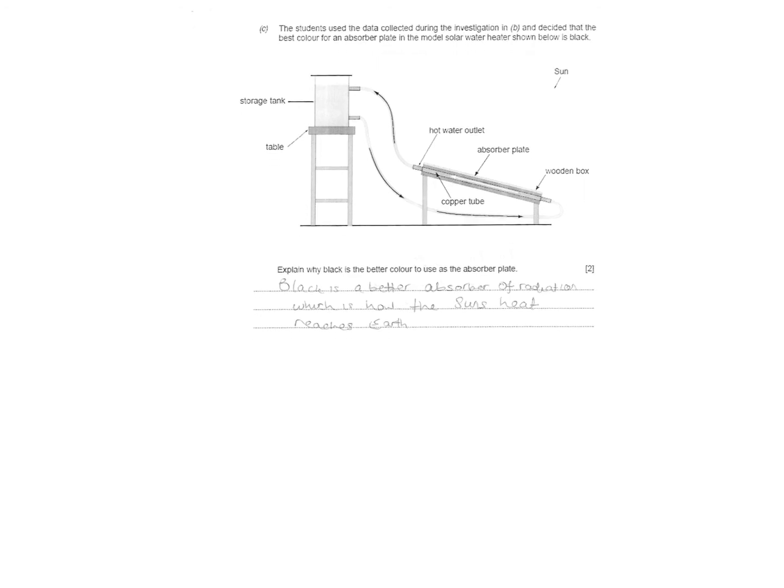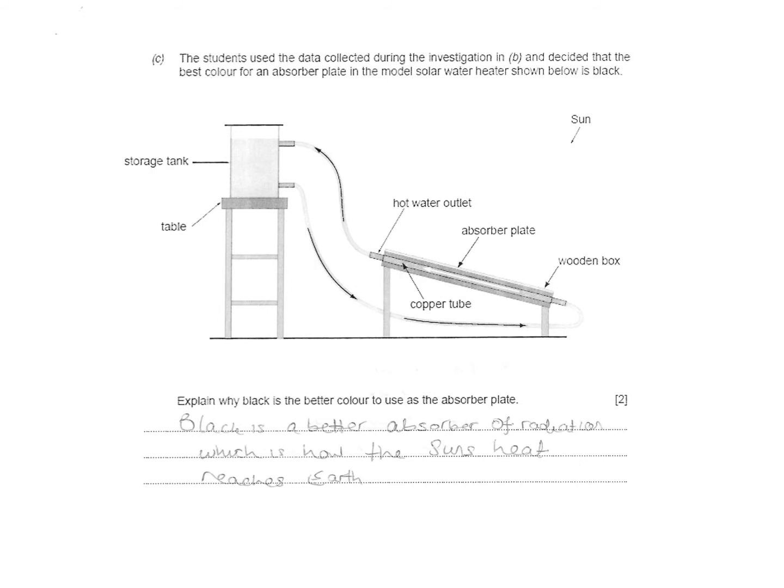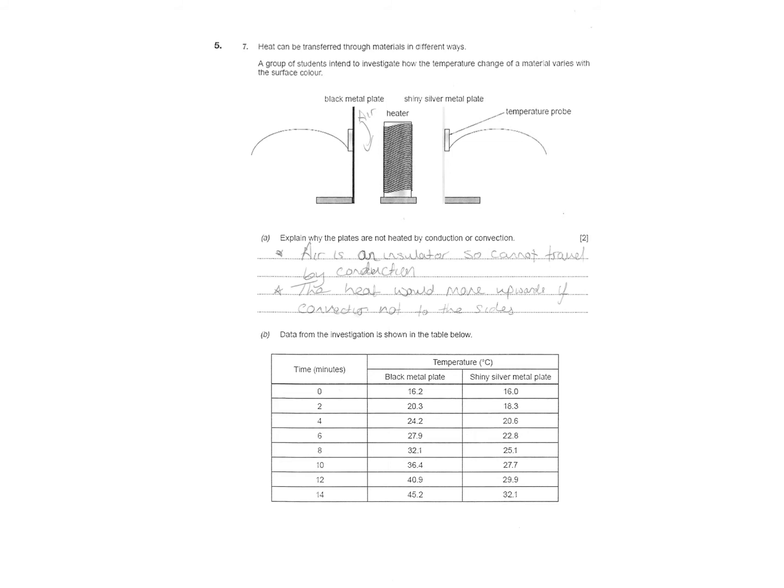The students used data collected during the investigation and decided the best colour for the solar water heater shown below is black. Explain why black is better. Black is an absorber of heat, so it will show how much sun's heat reaches the earth. You can see the same kind of question comes up as before. As soon as you see black and silver, you know it's a radiation experiment. This one will fall off quicker because the black will absorb the heat and cause the wax to melt and it fall off. The air is an insulator, so it cannot travel by conduction - there's no solid. There's a gap here where there's no solid, so it can't be conduction. The heat would move upwards if it's convection, because hot air would rise. That's why it has to be radiation.